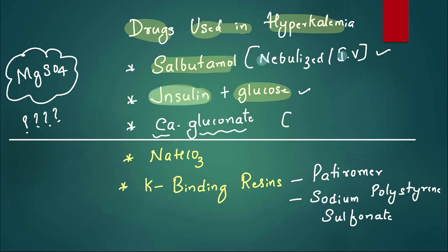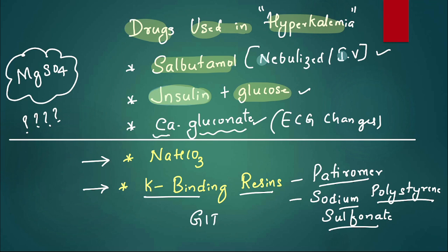Sometimes the hyperkalemia can be chronic and may be due to acidosis. So if there is acidosis, treat acidosis by giving sodium bicarbonate. Sometimes we can also use potassium-binding resins like patiromer, sodium polystyrene sulfonate. They bind potassium in the GIT and that's why they prevent absorption of potassium into the systemic circulation.